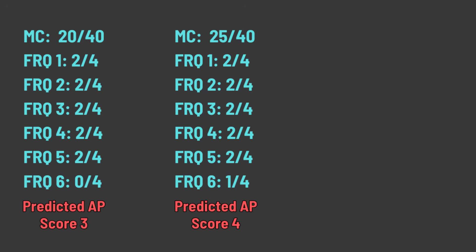In the next scenario, maybe you could squeak out a couple more multiple choice questions and get 25 out of 40. Then on FRQ one through five, you get about half credit. And then on FRQ six, maybe you could sneak out one point. That's going to get you a predicted score of a four — that's a really good score.